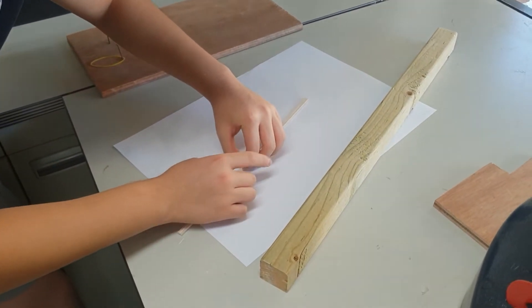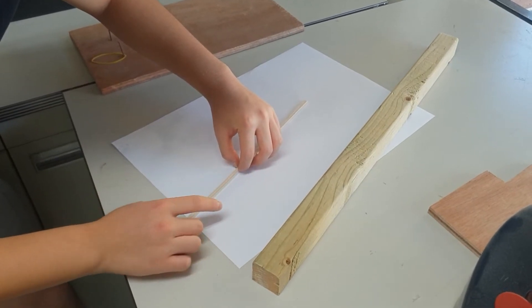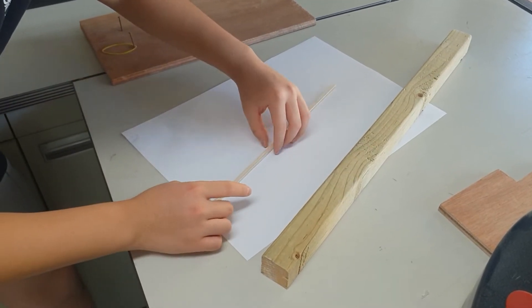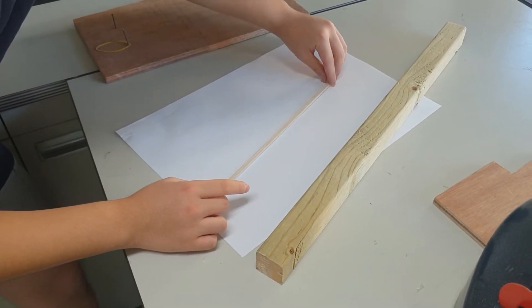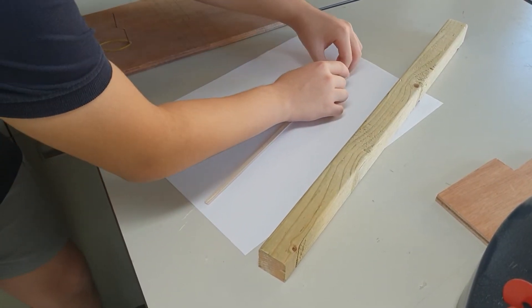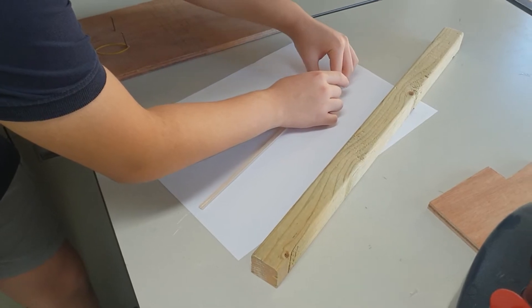And it's also important that you do this on paper so that you don't end up gluing your balsa wood to the table, or worse, to a piece of wood. Because you will break your balsa wood when you try to lift it up.